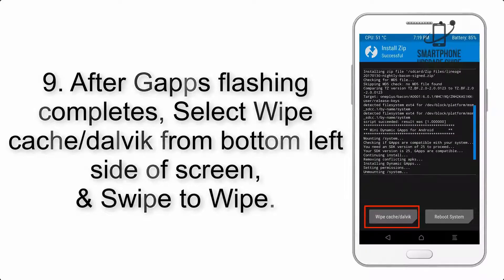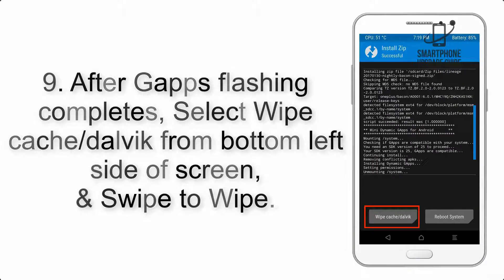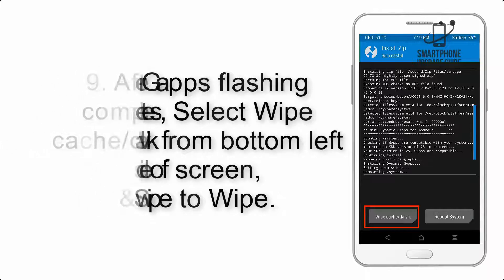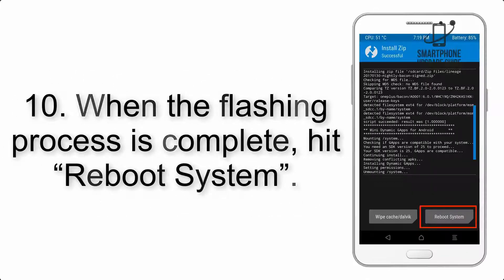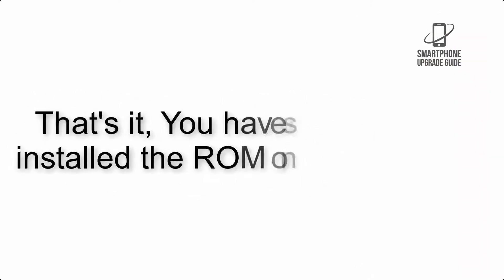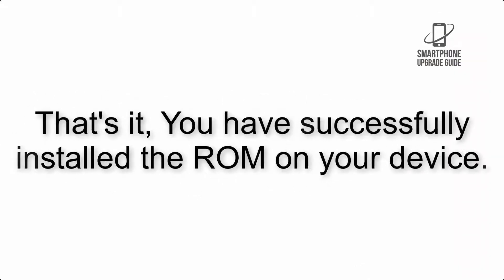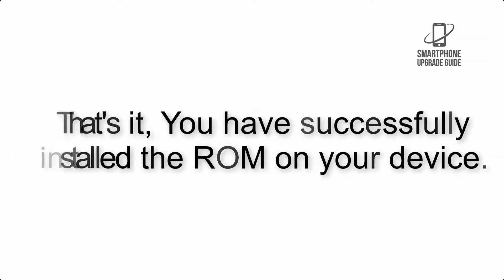Step 8: Flash the GApps zip package in the same manner. Step 9: After GApps flashing completes, select Wipe Cache and Dalvik from the bottom left side of the screen and swipe to wipe. Step 10: When the flashing process is complete, hit Reboot System. That's it — you have successfully installed the ROM on your device.